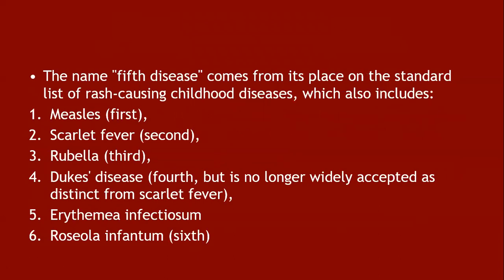The name 'fifth disease' comes from its place on the standard list of rash-causing childhood diseases. First disease is measles; second disease is scarlet fever (a bacterial infection); rubella is the third disease; Duke disease is the fourth, though it is no longer widely acceptable as a distinct entity from scarlet fever; fifth disease is erythema infectiosum; and sixth disease is roseola infantum.